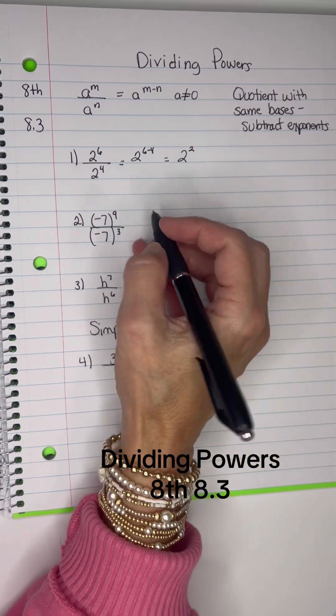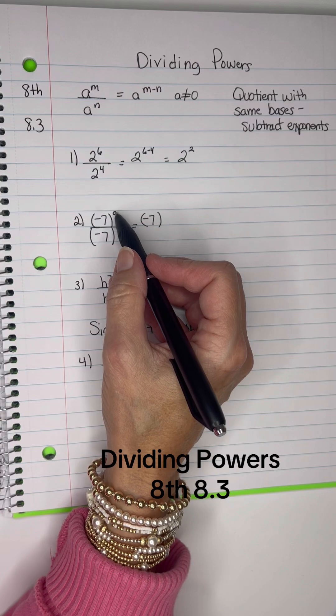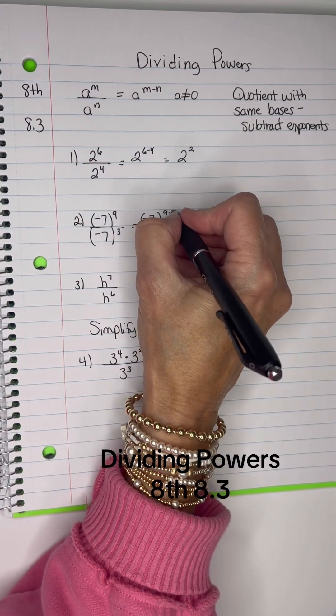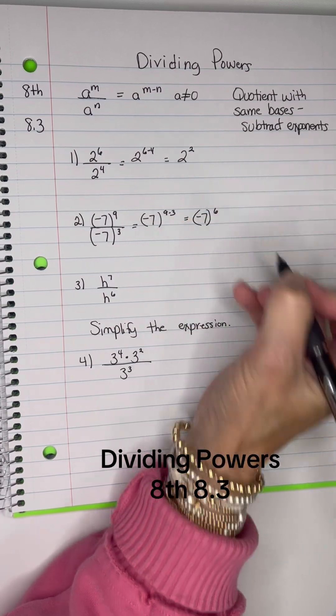Alright, I have the same bases again here, so write down your base and then subtract. 9 minus 3, 9 minus 3 is 6. So this equals negative 7 in parentheses to the 6th.